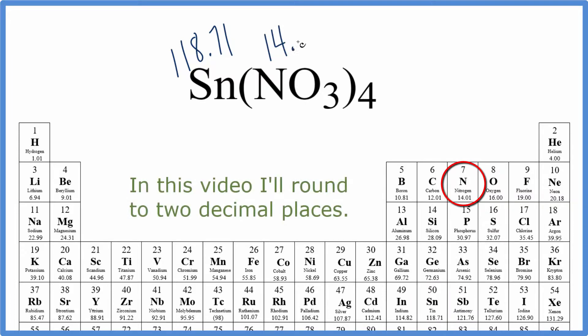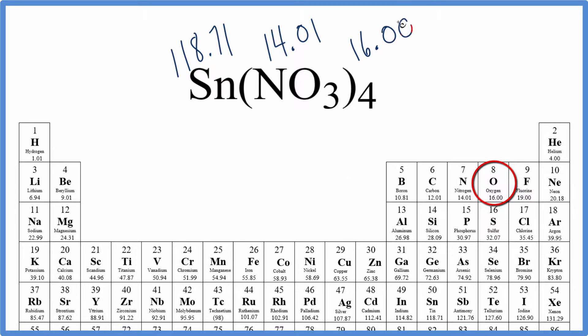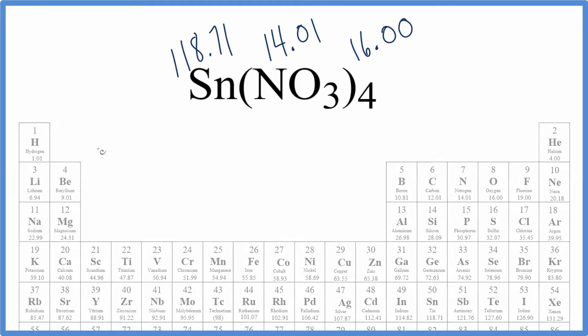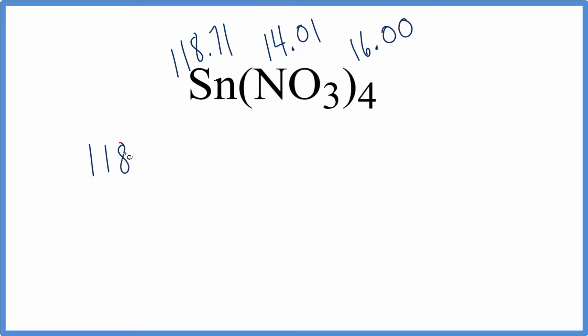Nitrogen is 14.01, and then oxygen is 16.00 grams per mole. We'll write our 118.71 plus, and we'll use our parentheses here.